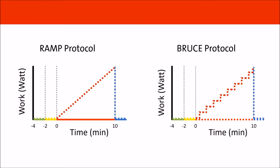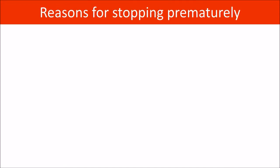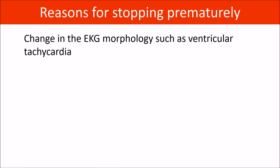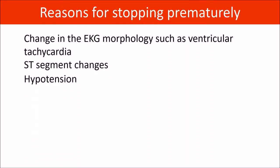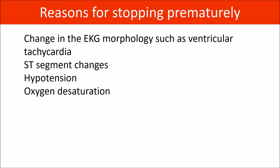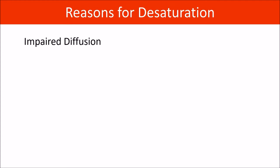There are several protocols for increasing intensity in CPET. We will be using the RAMP protocol, where we smoothly increase the intensity of exercise. We may also have to stop the test prematurely for several reasons, including increasing ectopic beats, changes in EKG morphology such as ventricular tachycardia, ST segment changes, hypotension, or oxygen desaturation. Even though you are exercising, your oxygen saturation should still be greater than 90%. Things that may cause desaturation are impaired diffusion, V/Q mismatch, or a right-to-left shunt.